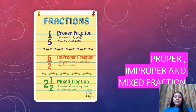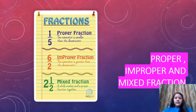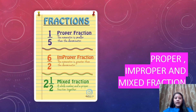This is the number 1 upon 5. The numerator is smaller than the denominator — it is a proper fraction. 6 upon 2 — this is an improper fraction, where the numerator is greater than the denominator. And this is the mixed fraction: 2 is equal to 1 and 1 upon 2, a whole number and a proper fraction together.